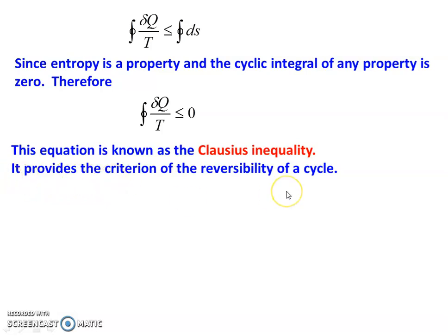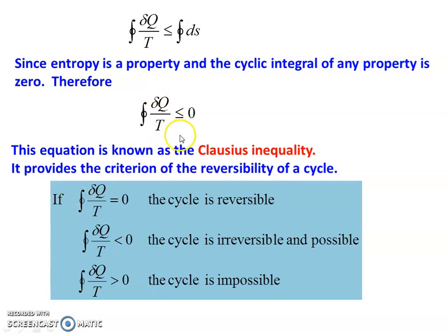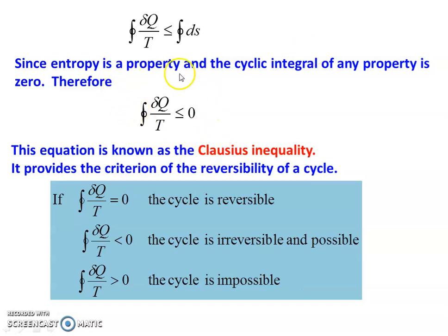The Clausius Inequality provides a criterion for the reversibility of a cycle. If the cyclic integral of δQ/T equals zero, the cycle is reversible. If the cyclic integral of δQ/T is less than zero, the cycle is irreversible but possible. If the cyclic integral of δQ/T is greater than zero, the cycle is impossible. For any cycle, we calculate the cyclic integral of δQ/T to decide whether the cycle is reversible, irreversible, or impossible.